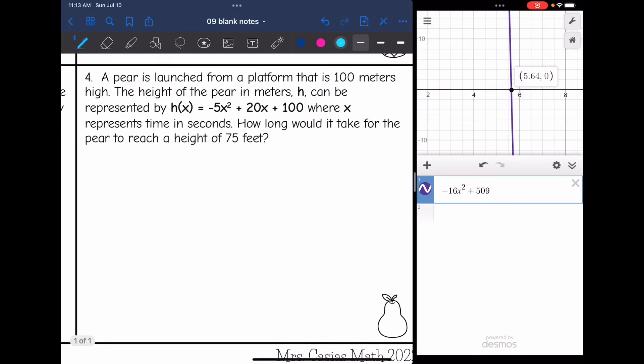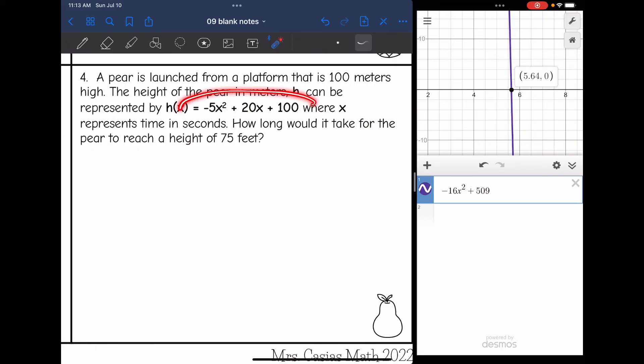This one's kind of similar. They're not asking for some key feature from this parabola. They're asking when is it going to be a height of 75 feet? The height of the pair is h(x). So I'm going to replace h(x) with 75. My equation will be 75 = -5x² + 20x + 100. Now I'm trying to find the positive zero or positive solution. That will tell me the x or the time when the height is 75 feet.